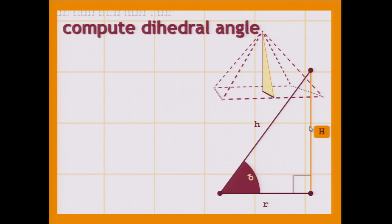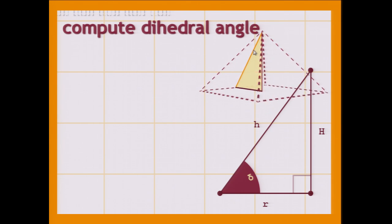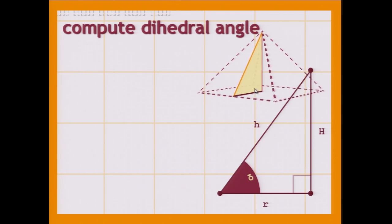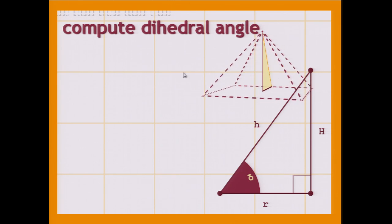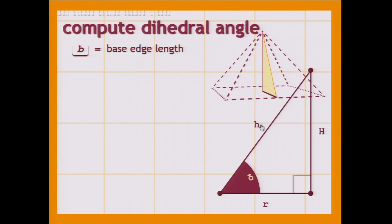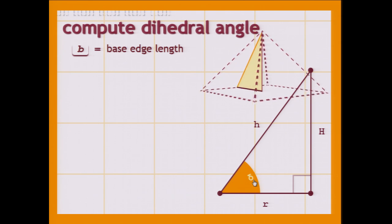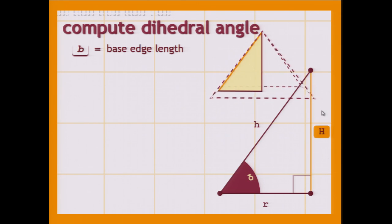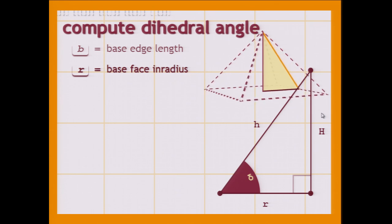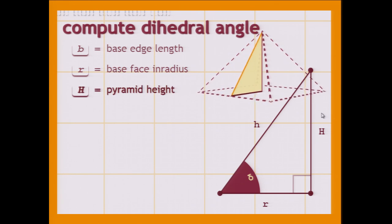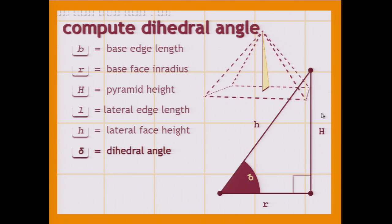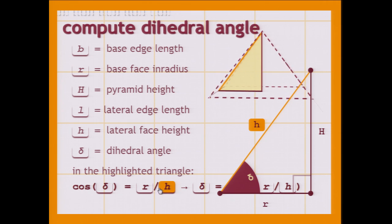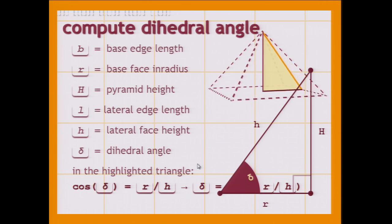Moving on — we have the pyramid. These are the lateral faces. The orange line is the height of a lateral face, and this one is the height of the entire pyramid. And this one is going to be the inner radius of the base. So the highlighted triangle gives us the angle between the two faces, the height of the lateral triangle, the inner radius of the base, and the height of the pyramid. So we have: the base edge length, R the base face inner radius, the pyramid height, the lateral edge length, the lateral face height, the angle between the two faces. And in this triangle, we can get the angle from the cosine, which is R over H. So we can get delta from there.